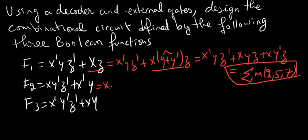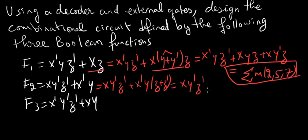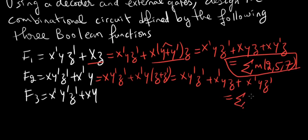Now we do the same for F2, which is XȲZ̄ plus X̄YZ plus Z̄. Expanding, we get XȲZ̄ plus XYZ plus X̄YZ̄. This gives us minterms 2, 3, and 4.